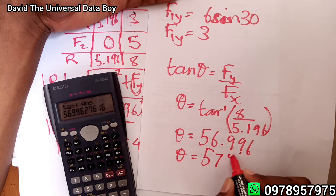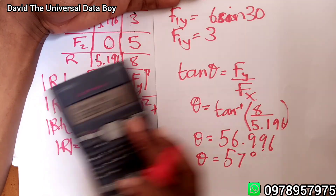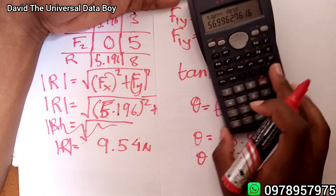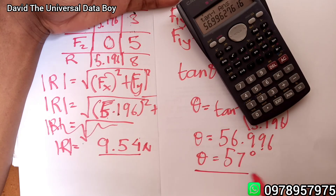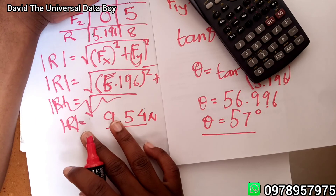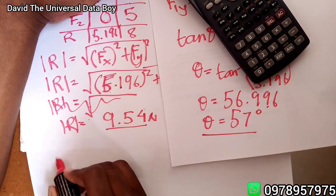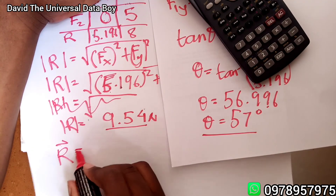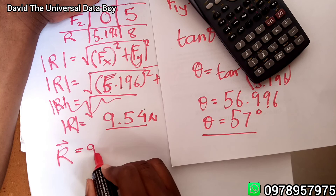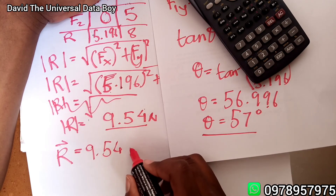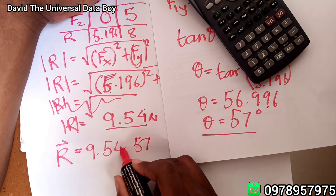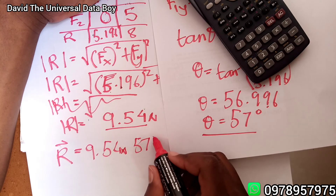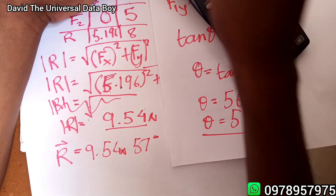So the magnitude is 9.54 newtons and the angle is 57 degrees with respect to the x-axis. Writing the full answer: the resultant vector R is 9.54 newtons at 57 degrees with respect to the x-axis.